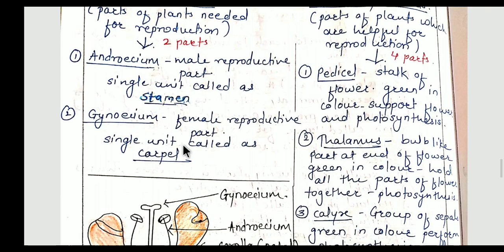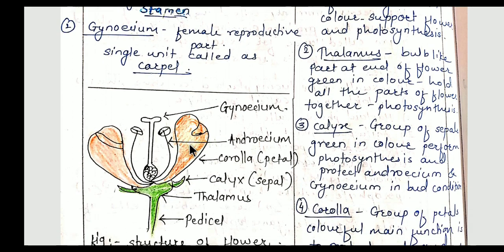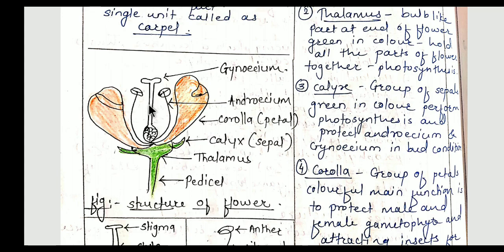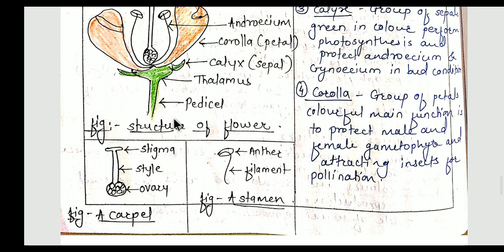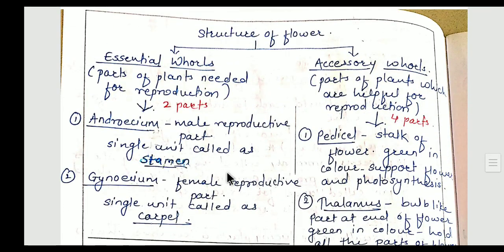Gynoecium is the female reproductive part and the single unit of gynoecium is called a carpel. In this diagram you can see the gynoecium and the androecium — androecium has many units in the flower. The carpel has three parts: stigma, style, and the small round-shaped ovary. The stamen has two parts: anther and filament. The stamen is the single unit of androecium, the male reproductive part.